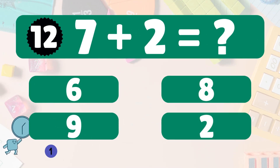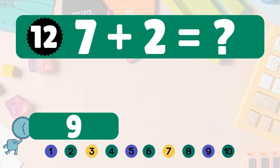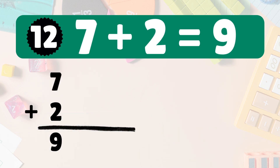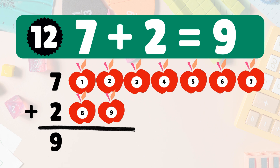You're on a roll. Next. 7 plus 2 equals what? 7 plus 2 is 9. Here we have 7 apples. Add 2 more. Let's count together. 1, 2, 3, 4, 5, 6, 7, 8, 9. So 7 plus 2 is 9. Amazing. Great job. Next.